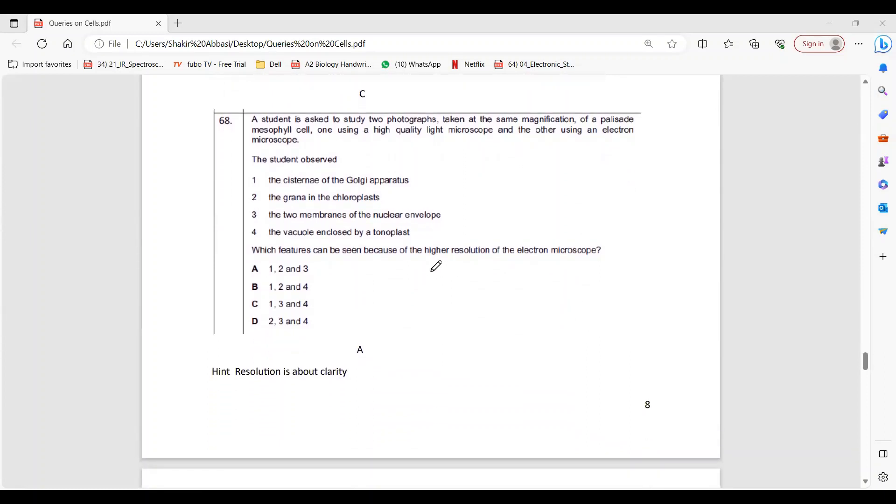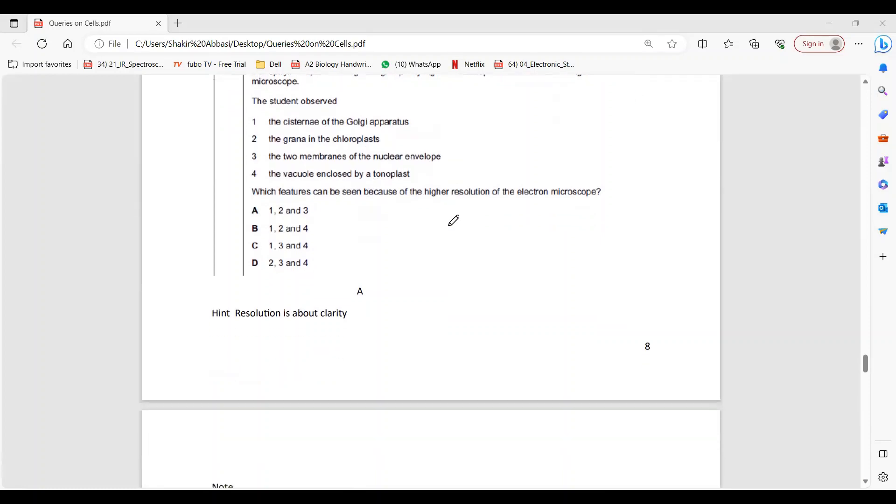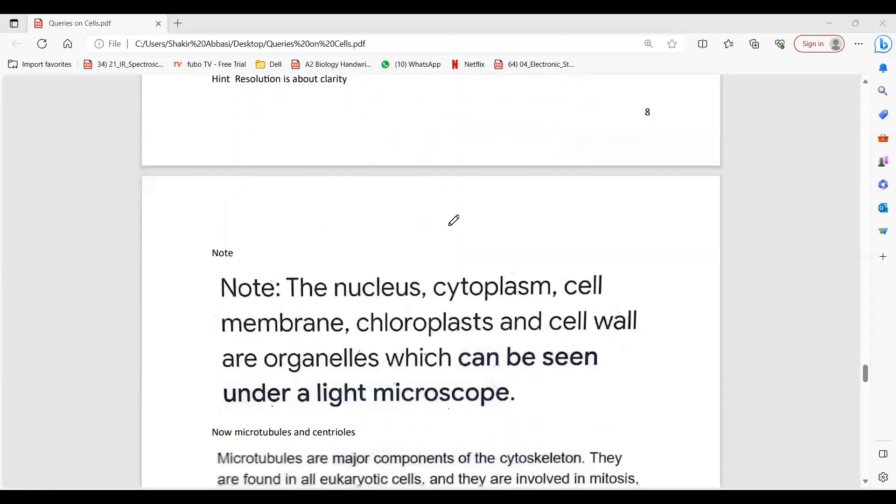68 is A because which features - high resolution. High resolution means the differentiation, the clarity. The cisternae, grana, and two membranes of nucleus, they are seen separately - that's the courtesy of resolution. If vacuole is seen, that is magnification.